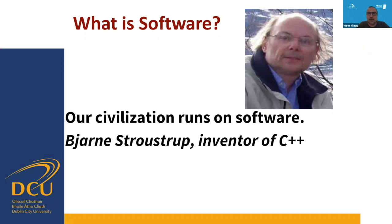Jean says our civilization runs on software, and I think he has a very good point — we couldn't live in today's world with this population size without software in any kind of business or even daily life. For example, if you want to travel from point A to point B, you book tickets online, make reservations, go to a terminal, and the whole process runs through several different computers considered as a system. Even traffic lights rely on embedded software.